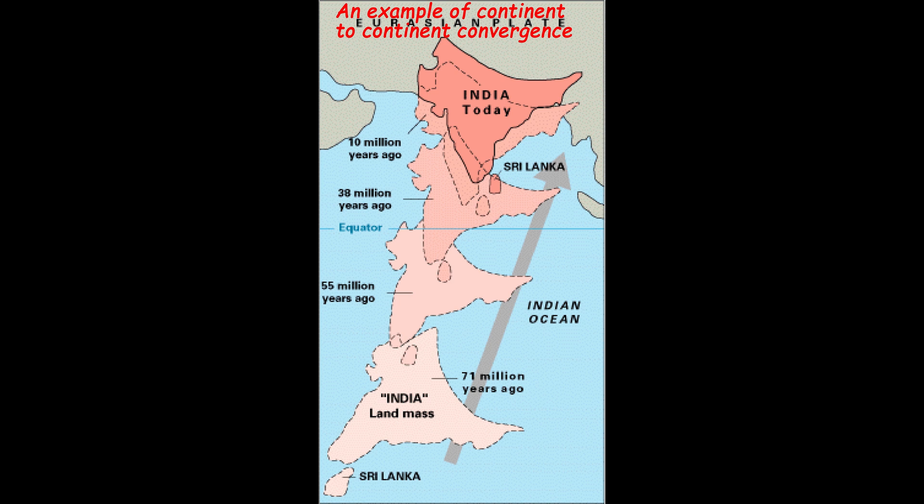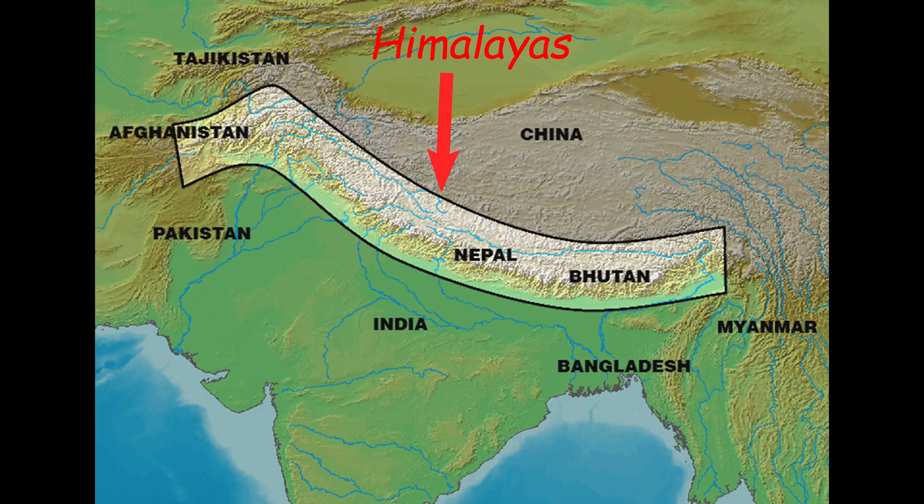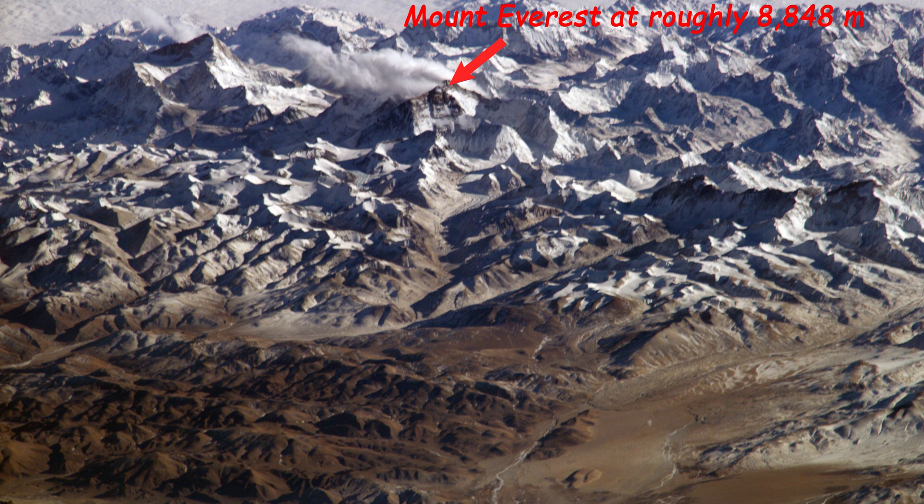Ocean base enclosure can occur on continent to continent boundaries, because of collisions between masses of continental lithosphere. An example of this occurred when the Indian landmass collided with the Eurasian plate. This process created the Himalayas, and the tallest mountain today, Mount Everest.